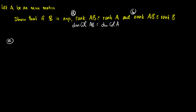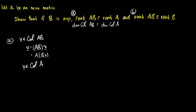For part A, we start by taking a vector v in the column space of AB. This means we can write v as AB times some vector x. Using associativity, we can also write this as A times the vector Bx. So v is really just a linear combination of the columns of A, which means v is also in the column space of A.